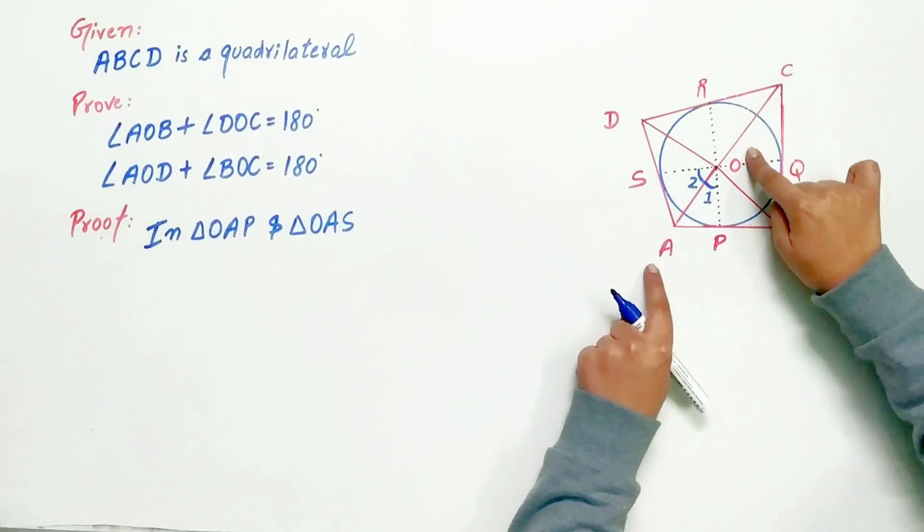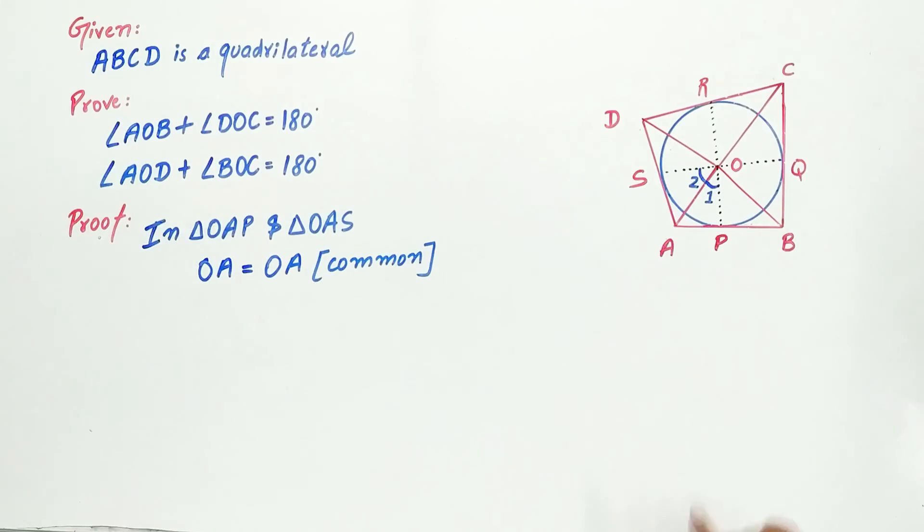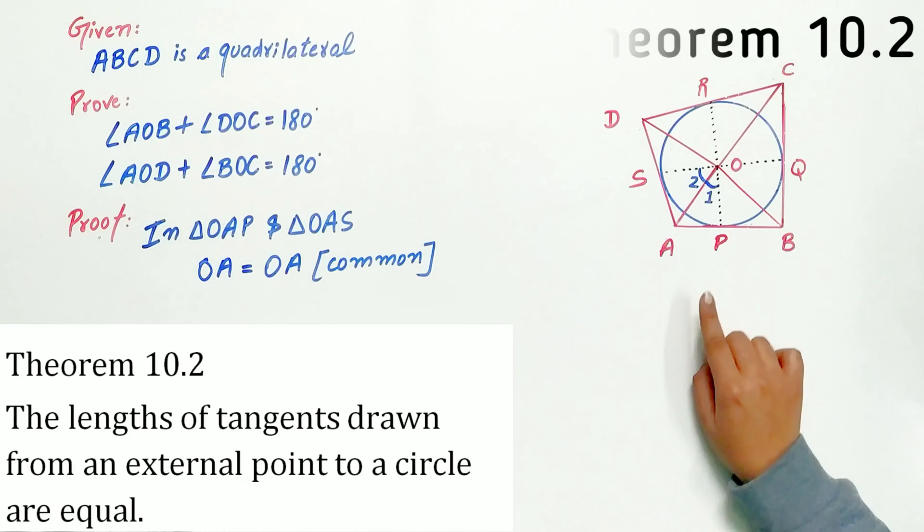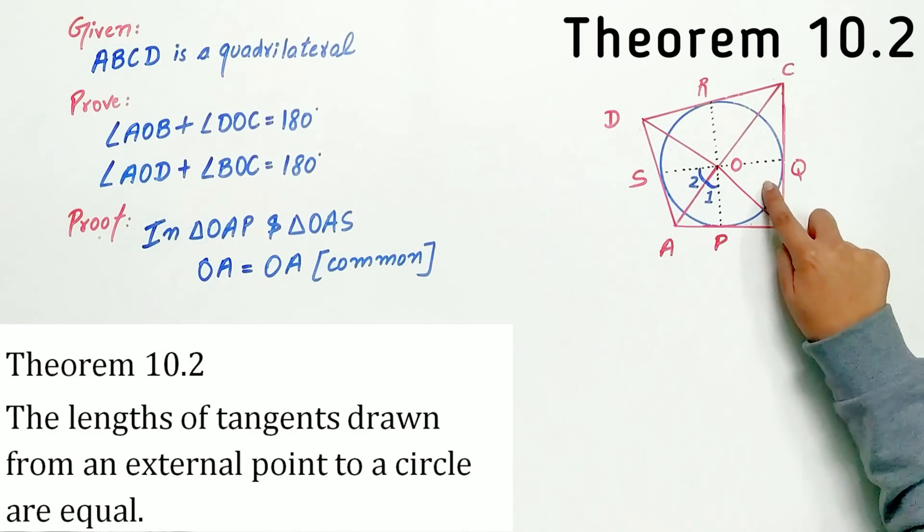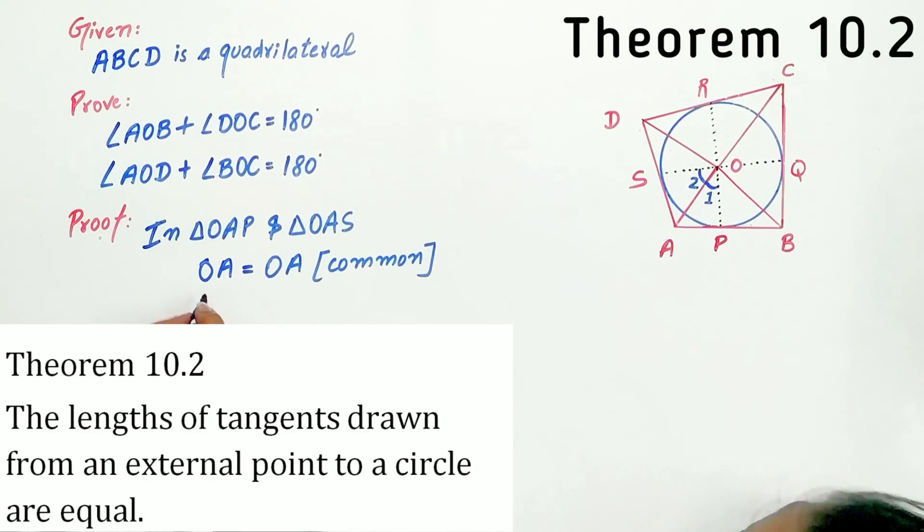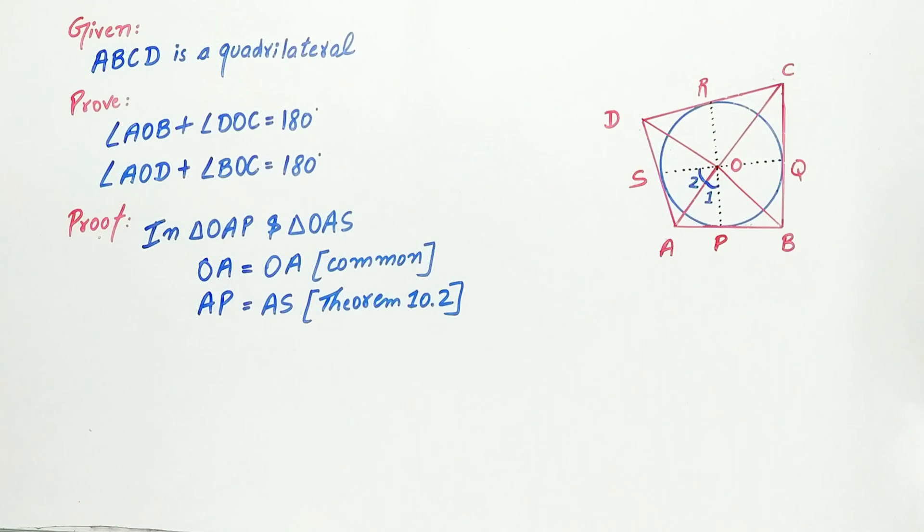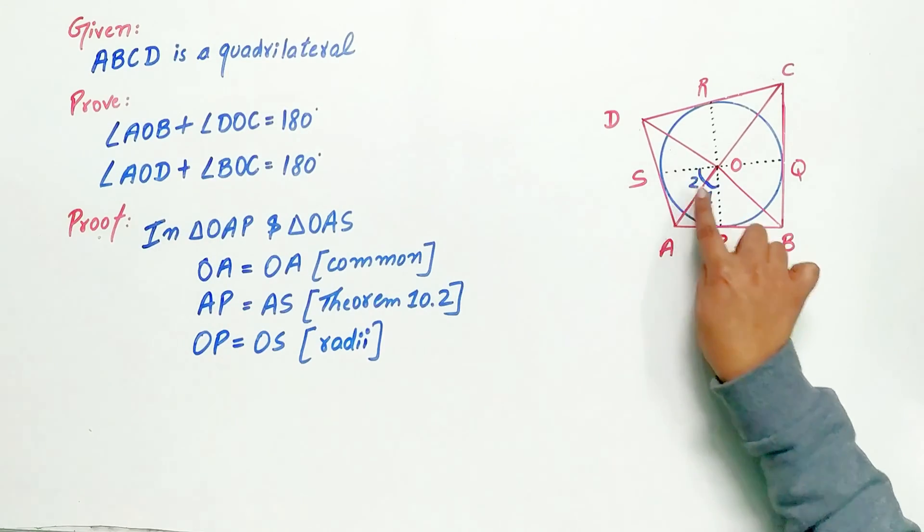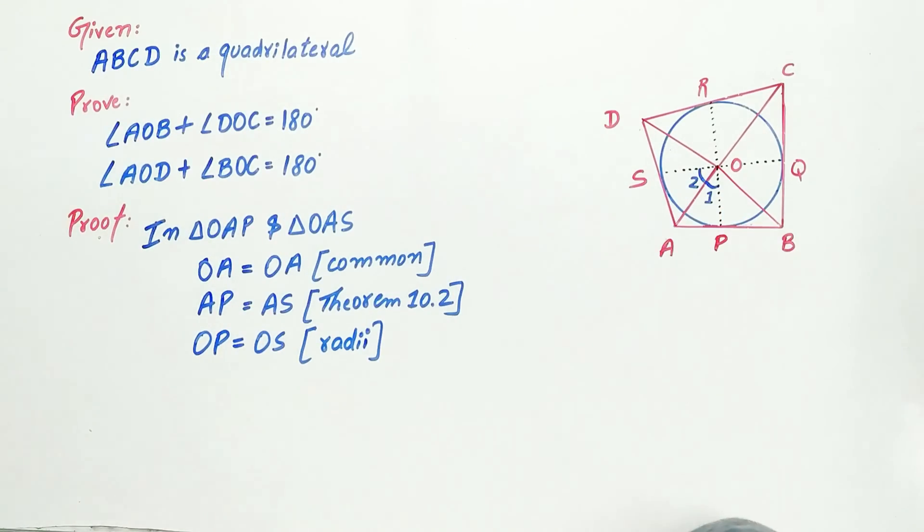Now OA is common in both triangles. AP equals AS by theorem 10.2, which states that the lengths of tangents drawn from an external point to a circle are equal. And OP equals OS because they are radii of the circle. Hence, by SSS, both triangles are congruent. And by CPCT, angle 1 equals angle 2.